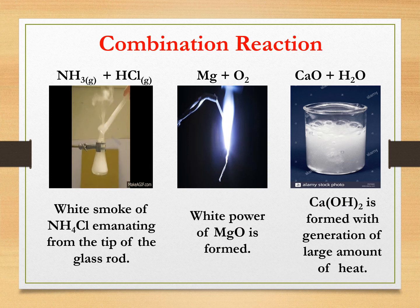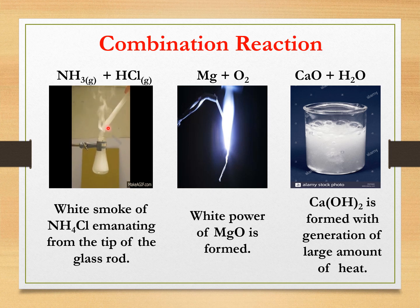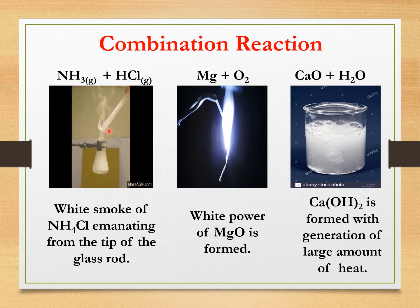Examples of combination reaction. Take some hydrochloric acid in a flask, heat it, and hold a glass rod which is dipped in ammonia solution near the mouth of the flask. What you observe is white colored smoke emanating from the tip of the glass rod.